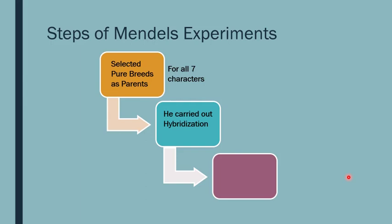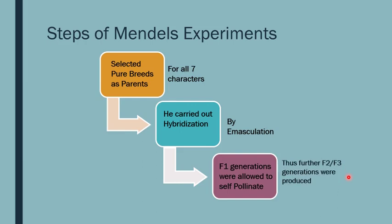Afterwards, he carried out hybridization between two pure varieties by emasculation — he removed the anthers of one variety, treated it as the female, and carried out cross-pollination between two pure breeds to obtain the F1 generation. The third step was that the F1 generation was allowed to self-pollinate to obtain F2 and F3 generations. He maintained a proper record, using knowledge of mathematics and statistics.